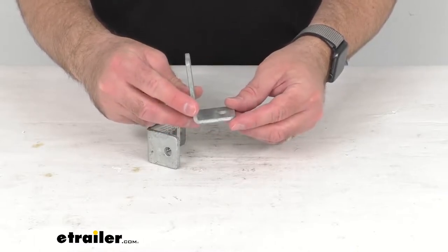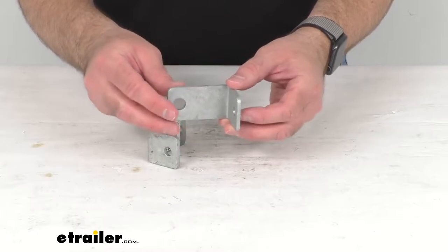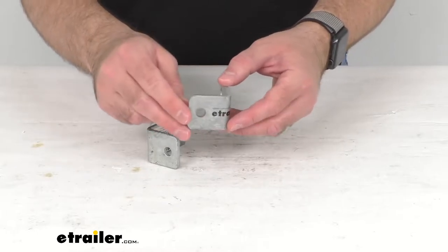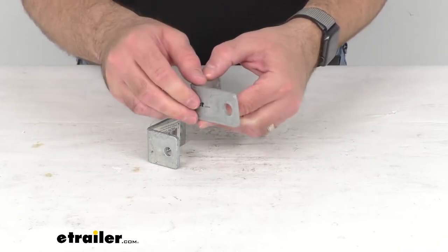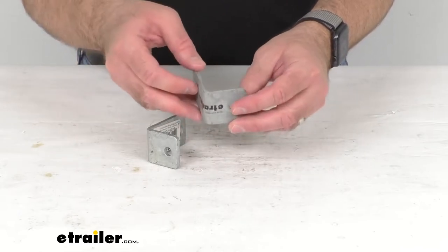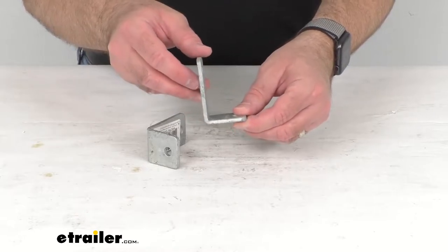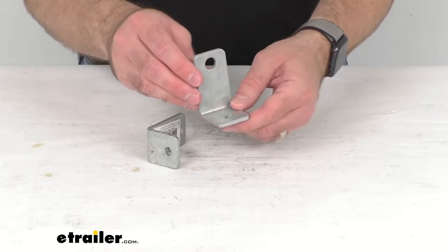These L-shaped brackets accommodate a variety of different roller lengths: 4 inches, 5 inches, 8 inches, 10 inches, 12 inches, and 18 inch long rollers that take a half inch diameter shaft.